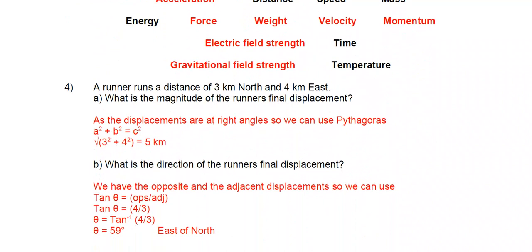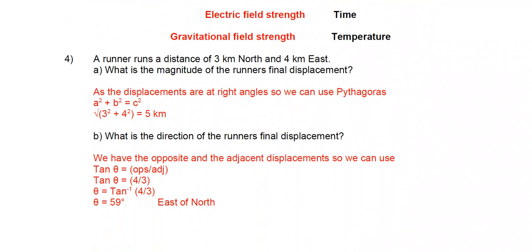Question number 4. A runner runs a distance of 3 kilometers north and 4 kilometers east. What is the magnitude of the runner's final displacement?